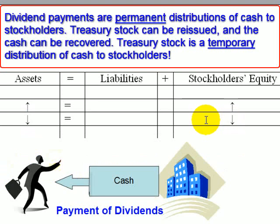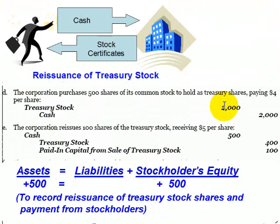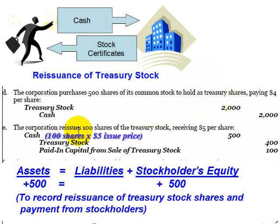In effect, the purchase of treasury stock works just like a dividend, except that this cash can be recovered later when the corporation reissues the shares. When the shares are reissued, cash assets will go up again and stockholders' equity will go up as well, and the balance in the treasury account will fall. When the shares are reissued, in this case we're reissuing 100 of these shares at $5 per share, so cash assets will go up by $500. The credit goes to the treasury stock account.